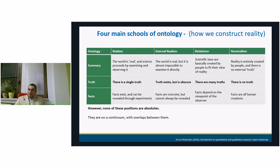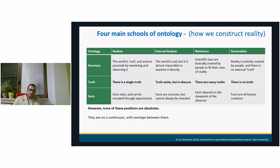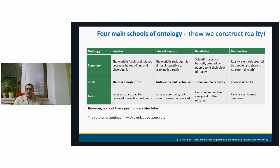The third school is relativism. They say that laws and order are created by people to fit their view of reality and to serve society. There is not a single truth — there are many truths — and each one is real depending on who is saying it. The facts depend on the viewpoint of the observer, illustrated by the phrase 'beauty is in the eye of the beholder.' The last is nominalism, which says reality is created by people, there is no external truth at all. Some of them are even physicists who say that facts are all human creations.